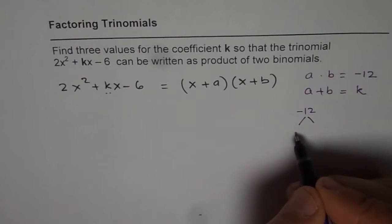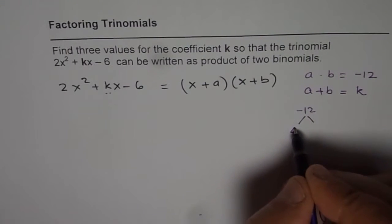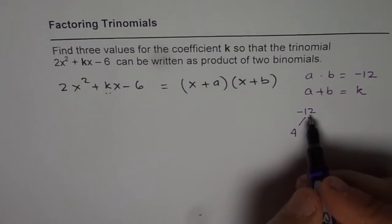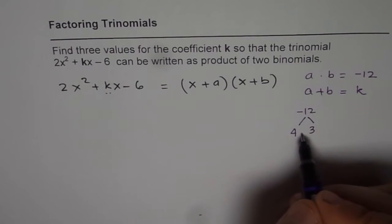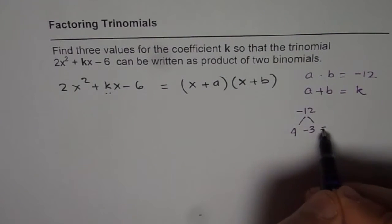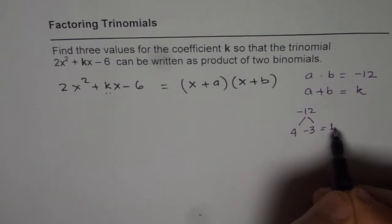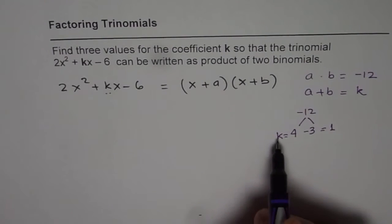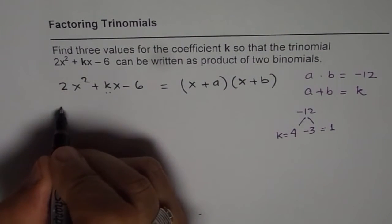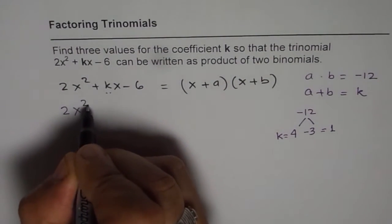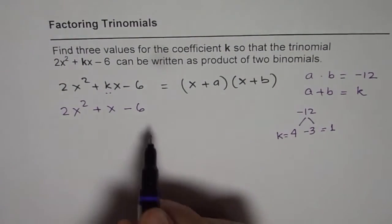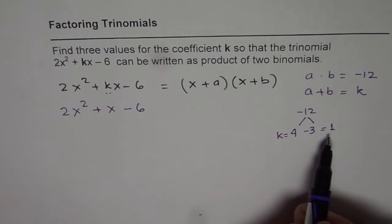So one of them could be for example 4 and 3. Remember if we are looking for -12, one of them has to be negative. Let's make 4 positive and 3 negative. So when you add them up what do you get? You get plus 1. So that gives us the k value. So we get one value of k as 1. So we can write one of them as 2x² + x - 6. Now it is up to you to factor and then show that it can be really factored.